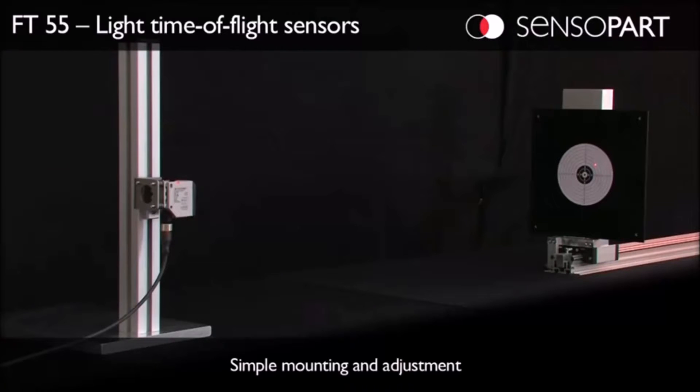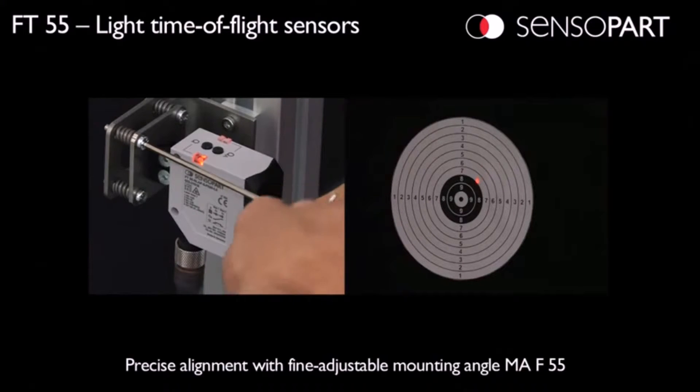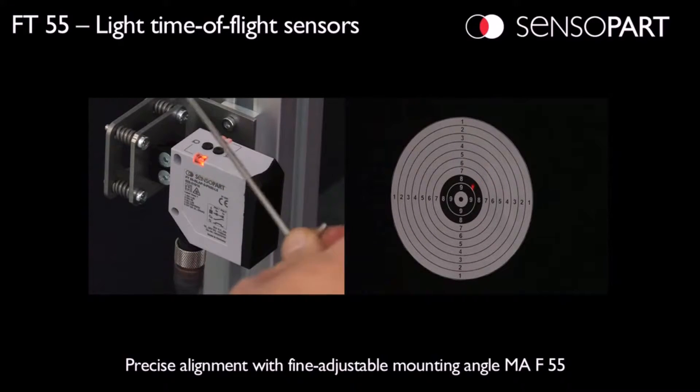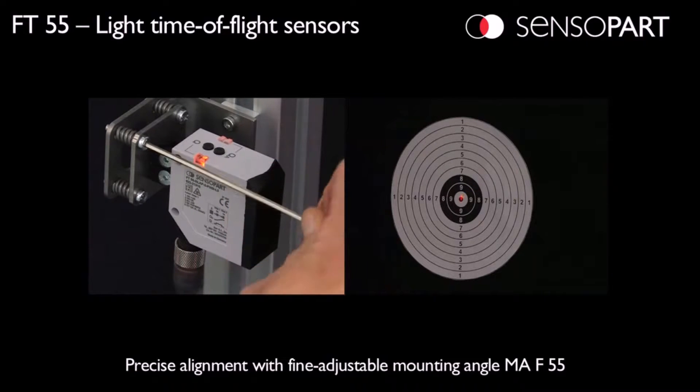At these long distances, it's pretty hard to aim the sensor, so we have this awesome mounting bracket, the MA55. You can see as he adjusts the Allen wrench, it dials in and zooms right on the target. That's pretty helpful.